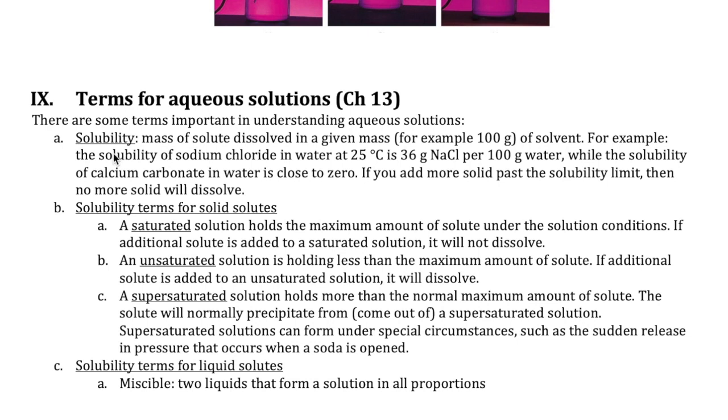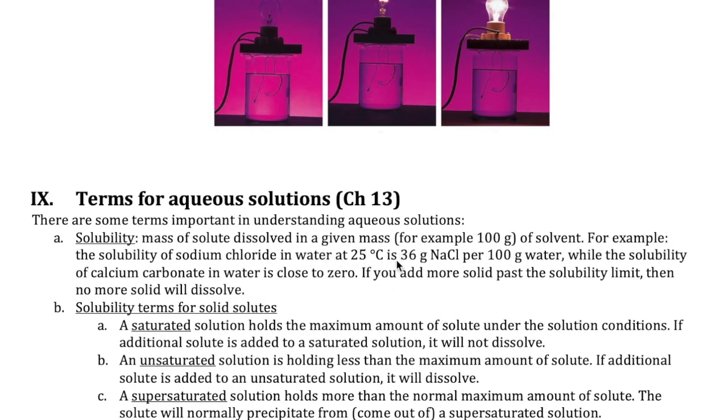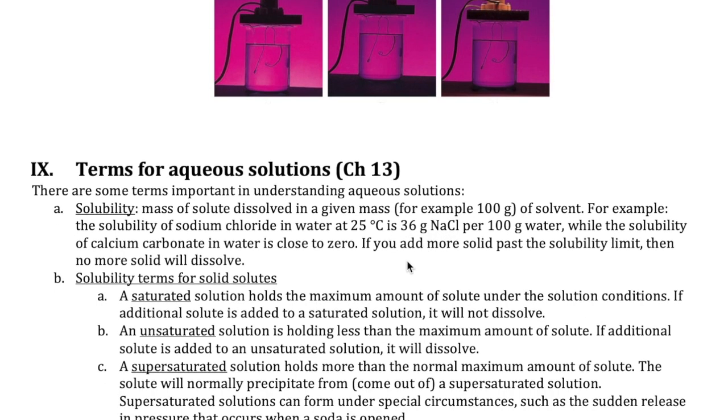The word solubility refers to how much solute is mixed in a given amount of solvent, usually in mass terms. For example, when we say the solubility of sodium chloride at 25 degrees Celsius is 36 grams of NaCl in 100 grams of water, that means that solute, at the most, can dissolve up till 36 grams. You can't add any more NaCl to that 100 grams of water. If you add more, the extra will not dissolve.